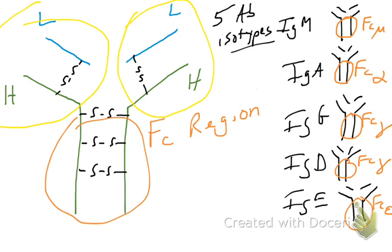I just used the term 'different constant regions,' which seems weird — how can something be constant and different? We'll see upcoming that all these antibodies are different isotypes, so their FC regions are different from one another. You need to know the FC region and what region is being referred to, because it can differ between different antibody isotypes.